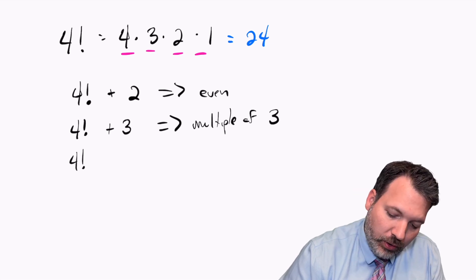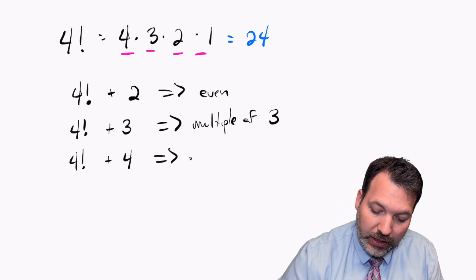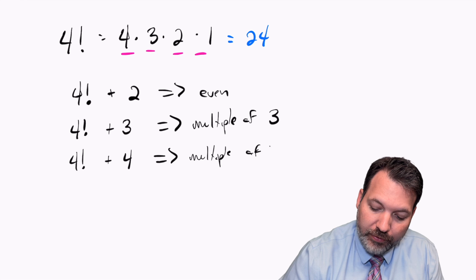And finally, of course, 4 factorial is a multiple of 4. And so 4 factorial plus another 4 makes another multiple of 4.